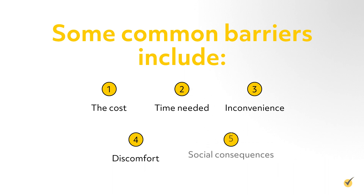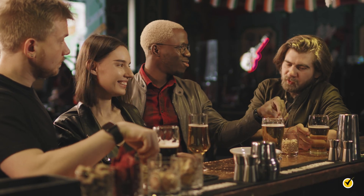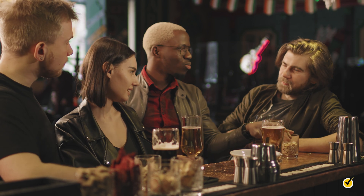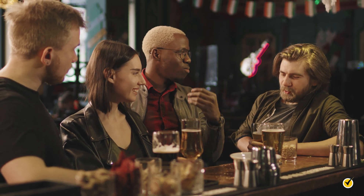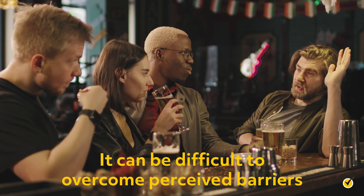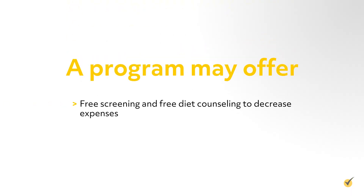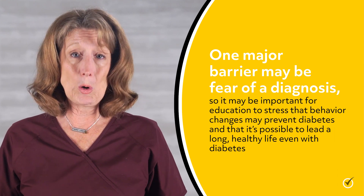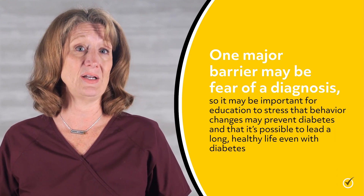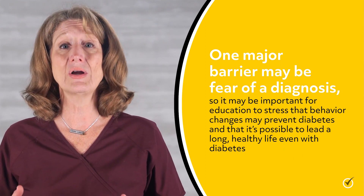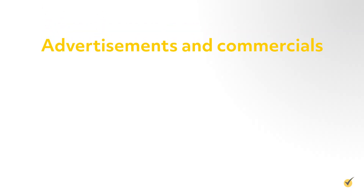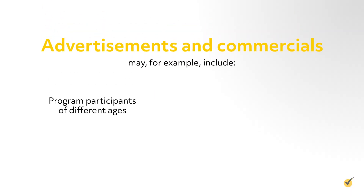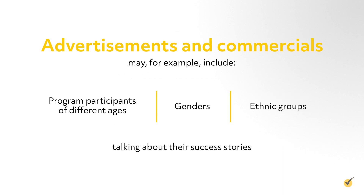Additionally, people may face social consequences. For example, if a person has enjoyed having four or five beers after work with friends and suddenly switches to diet soda or goes home, this is likely to affect their relationships. It can be difficult to overcome perceived barriers. A program may offer free screening and free diet counseling to decrease expenses, and may carry out education and screening outside of normal work hours to increase convenience. One major barrier may be fear of a diagnosis, so it may be important for education to stress that behavior changes may prevent diabetes and that it's possible to lead a long healthy life even with diabetes. Advertisements and commercials may include program participants of different ages, genders, and ethnic groups talking about their success stories.